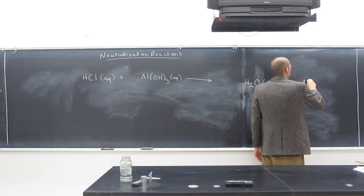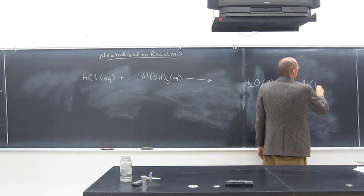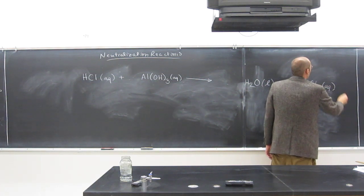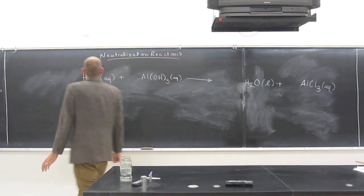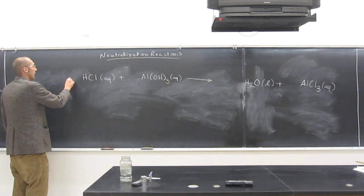So what's the formula for aluminum chloride? AlCl3, right? Aluminum chloride, and that's going to be aqueous in this case. So is this equation balanced? No. So we've got to balance it first.